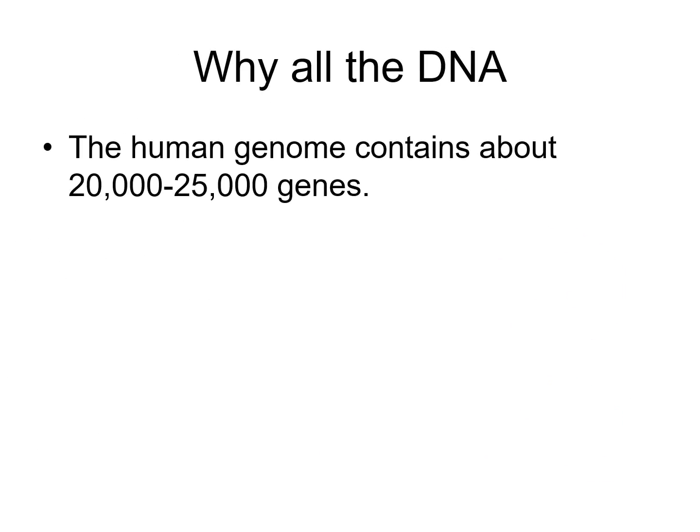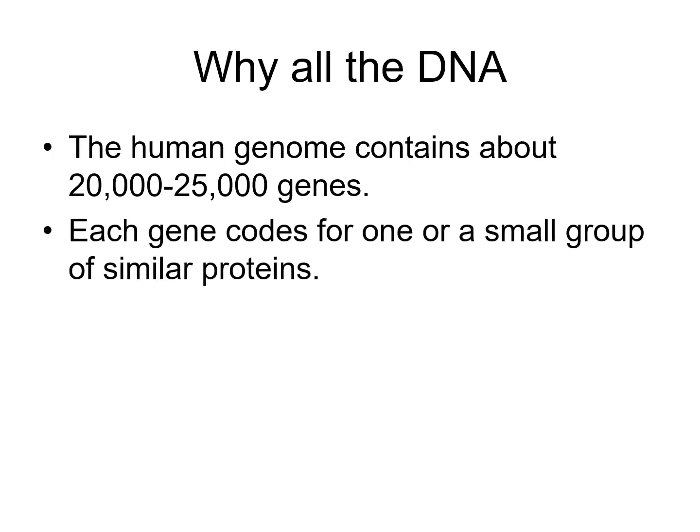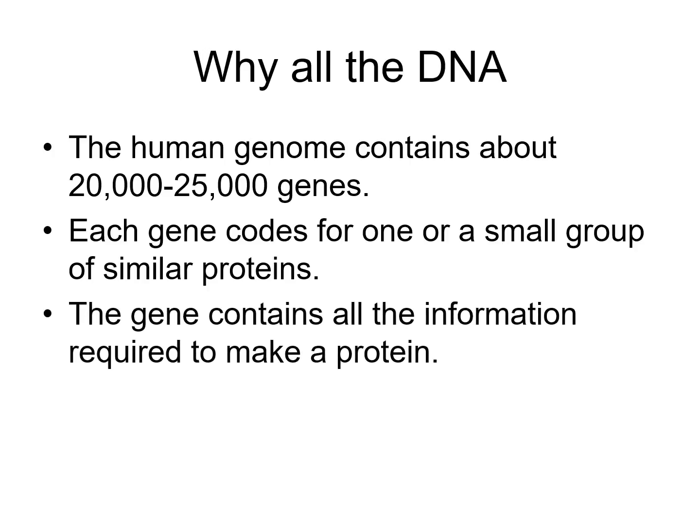Why do we need all this DNA? Your body has various proteins, and the coding for those proteins needs to be encoded in the DNA. The human genome has about 20,000 to 25,000 different genes, and each gene codes for either one or a small group of similar proteins. The gene has all the information required to make the protein encoded in the order — the primary structure — of its nucleotides.